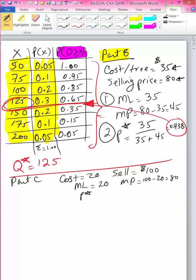So that changes our critical probability to be $20 divided by $20 plus $80, which is 0.2. But now this part says, because our selling price has changed, our demand distribution changes.